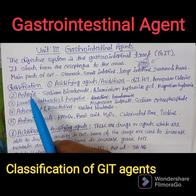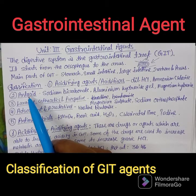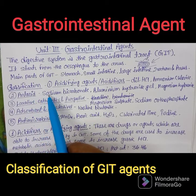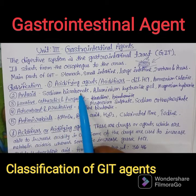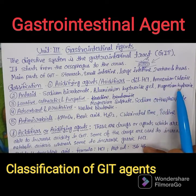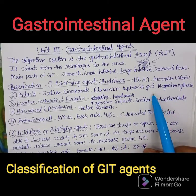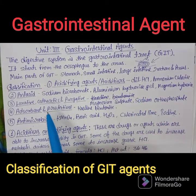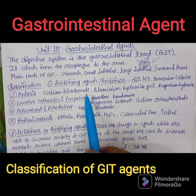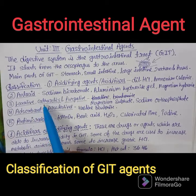The second classification is antacids. These will reduce the acid content in different parts of the GIT. Examples of antacids include sodium bicarbonate, aluminium hydroxide gel, and magnesium hydroxide. These three reduce acid in the stomach.